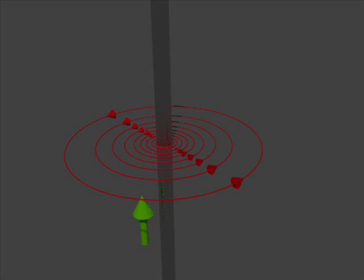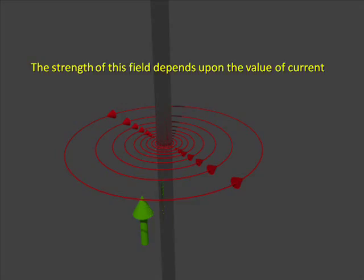A current through a conductor produces a magnetic field surrounding it. The strength of this field depends upon the value of current passing through the conductor.